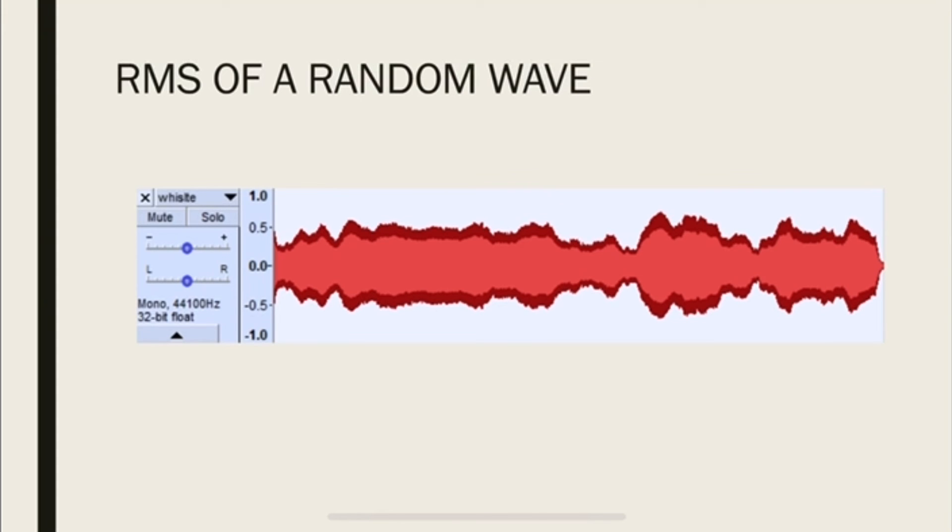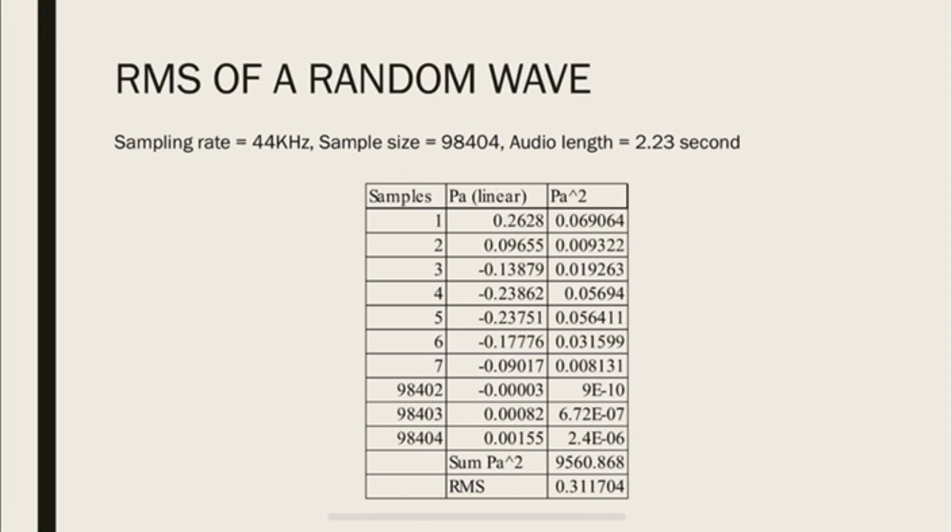Now, let's calculate the RMS of a random wave. Now, this signal is a human whistle and you can listen to it. So I have chosen a sampling rate of 44 kilohertz and sample size is 98,404 because the audio length is 2.23 second. If you multiply 2.23 by 44 kilohertz, you're going to get the number of the sample size is 98,404. And then I have the pressure values in the linear scale squared it, add it, and take the mean and I get the RMS value to be 0.311.